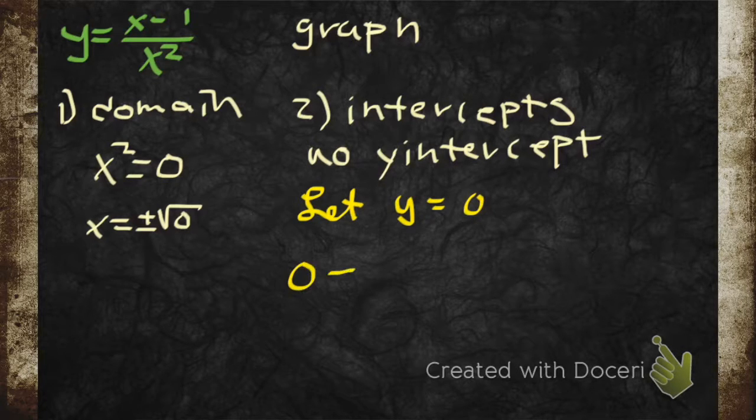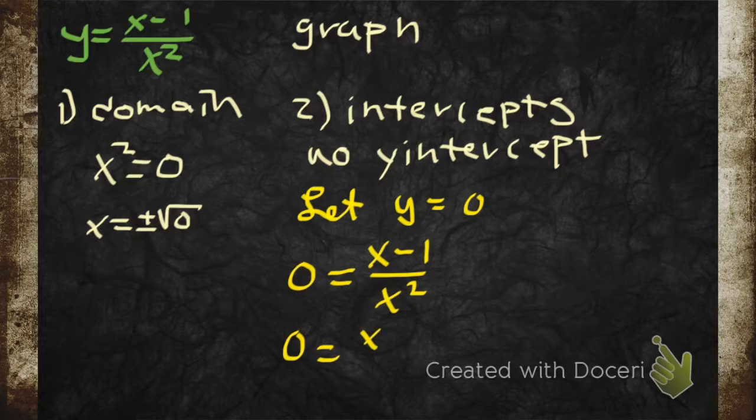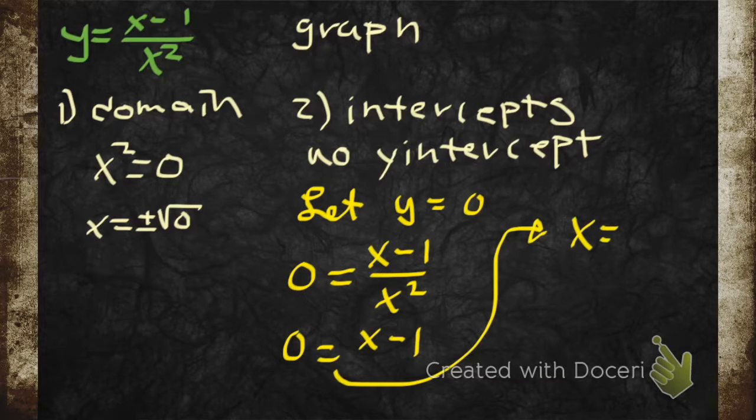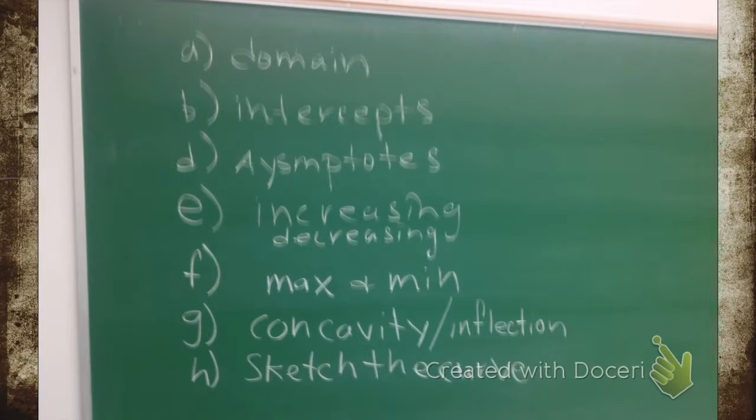Now, we're going to get the x intercepts by letting y be 0. So we go and we set it equal to 0. So that is only where the numerator is equal to 0. So our x intercept happens at 1, 0. That's our game plan. First, we're going to find the domain and the intercepts. We've already done that.